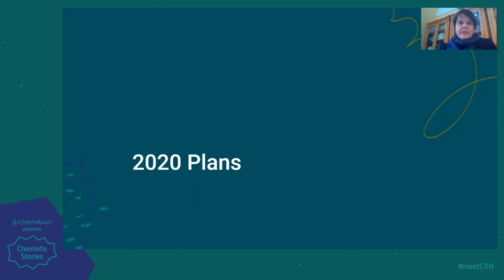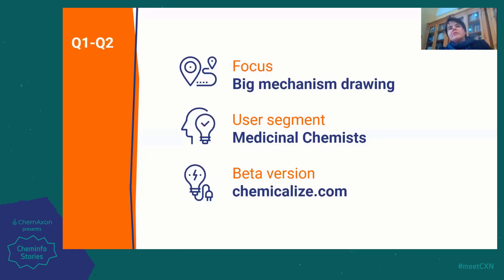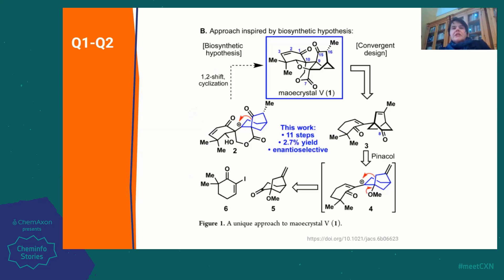Our roadmap for this year: we continue focusing on big mechanism drawing. Our plan is to integrate a beta version of the software into the Chemaxon Chemicalize.com interface, where you will be able to try it out. Besides the interviews and the workshops, you can share your thoughts and give feedback about the product. Here is an example of the images you will be able to draw with the software at the end of this quarter. As you may see, we are working on adding textboxes, templates, new arrow types, and colors.